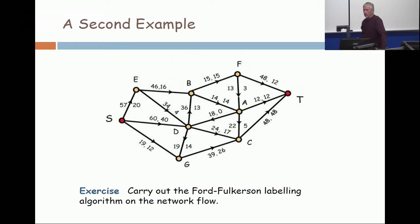What would you label? Well, I'd label S. Wouldn't you label E, D, and G? Those would be labeled. Because I can label E, I would label B. Because I can label D, I'd label C. Because I label D, I could label G.